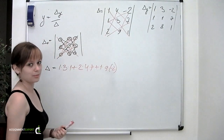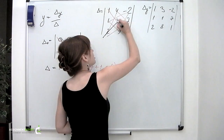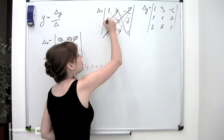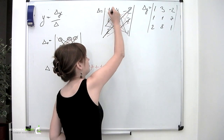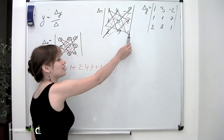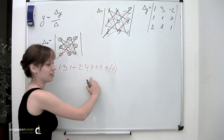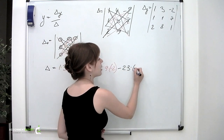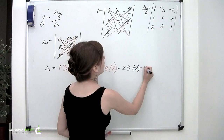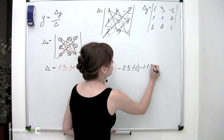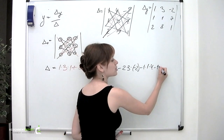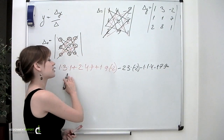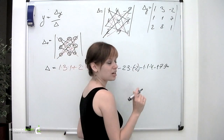Now the second star, the black one, along the reverse diagonal and its triangles: minus 2 multiplied by 3 and by minus 2, minus 1 multiplied by 1 and by 4, and minus 1 multiplied by 7 and by 9. We subtract these triplets from the first. Having performed all these calculations, we get delta equals minus 14.